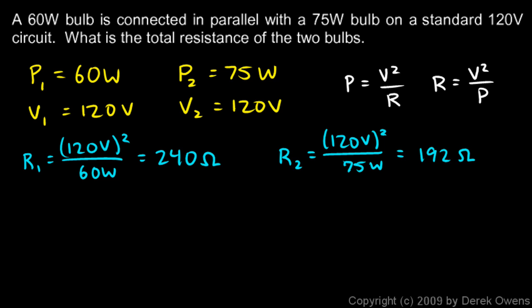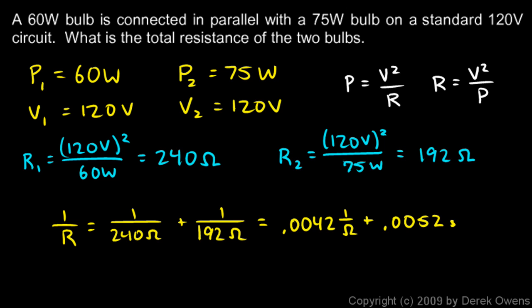And we want to know the total resistance, and we're told that those are connected in parallel. So I can say 1 over R is equal to 1 over 240 ohms plus 1 over 192 ohms. And I can take out a calculator: 1 over 240 is .0042, and 1 over 192 is .0052. And I just add those two numbers up and those add up to .0094.